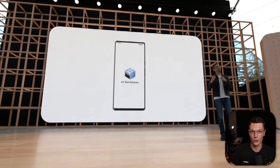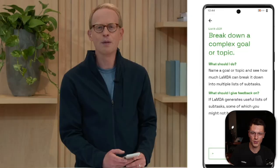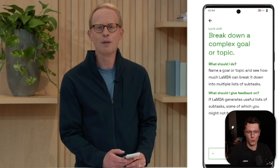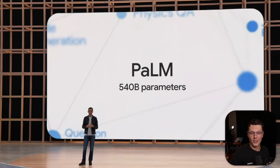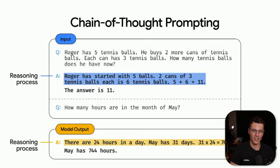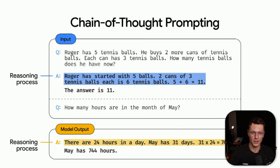They announced a new AI test kitchen where there are new features you can go in and try out. The most interesting one was "Listed," which uses machine learning to break down a complex goal and turn it into step-by-step solutions. PaLM was their next iteration of machine learning models with 540 billion parameters, enabling chain-of-thought prompting where it gives you answers and explains the reasoning for why it thought that was the right answer.